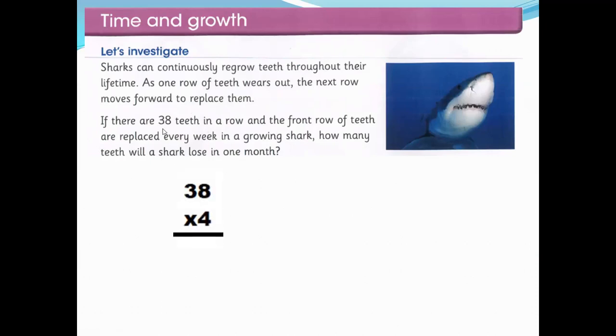Easy. 38 multiplied by 4. Why multiply by 4? Because in a month we have 4 weeks and in every week 38 teeth in a row will come or replace with the previous one. So simple 38 multiplied by 4. 8 fours are 32, 3 down, carry 3 and 2 down. 4 threes are 12, 13, 14, 15. 152.